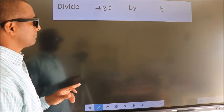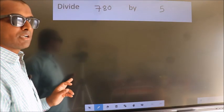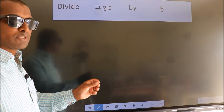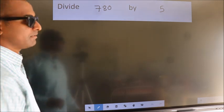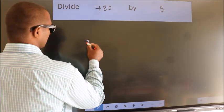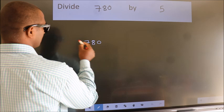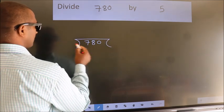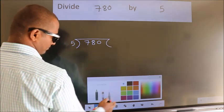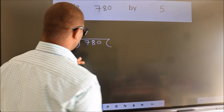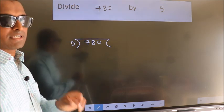Divide 780 by 5. To do this division, we should frame it in this way: 780 here, 5 here. This is your step 1.